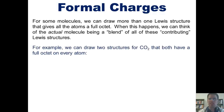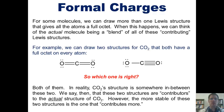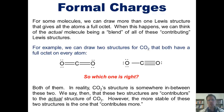For example, we can draw two structures for CO2, carbon dioxide, that both have a full octet on every atom, as we see here. The question is then, which one is right? As it turns out, both of them are. In reality, CO2's structure is somewhere in between these two structures.